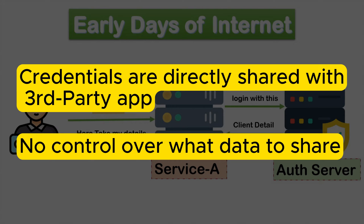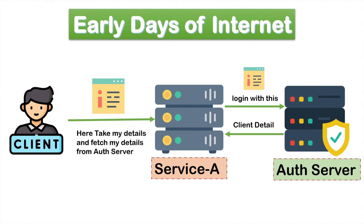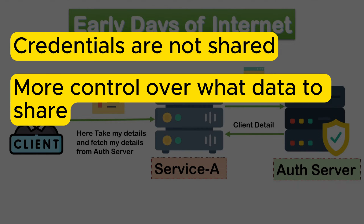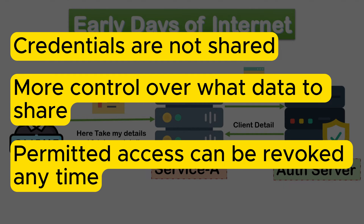This method was unsafe because it puts your credentials at risk, and there is no guarantee that service A would only access the required details from service B, as you do not have any control over what service A can access. To overcome these problems, OAuth was introduced. By following these standards, we don't need to share our credentials of service B to service A. It also allows us to control what data we want to share from one service to another, and we can revoke the permission of any service whenever we want.